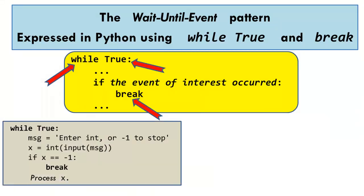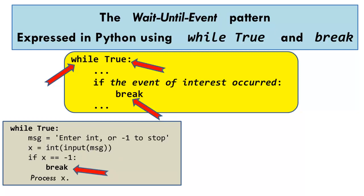Here is the Python implementation of our input-until-sentinel example. The WHILE TRUE loop repeatedly gets input and checks if the input is the agreed-upon sentinel, minus 1. If so, the program BREAKs out of the WHILE loop. Otherwise, the program processes the input as desired and continues the WHILE loop.